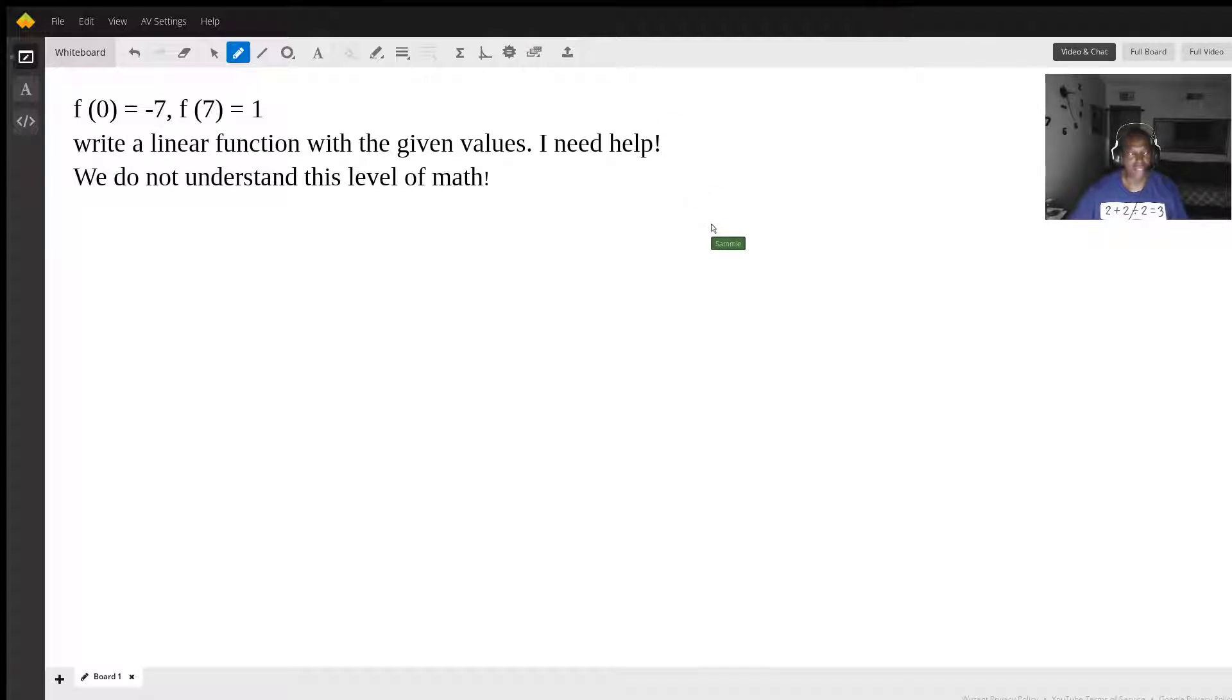Hi, this is Sammy W with Math Help. We have a problem: f(0) = -7, f(7) = 1. Write a linear function with the given values. I need help, we don't understand this level of math. Okay, so let's take a look at it.